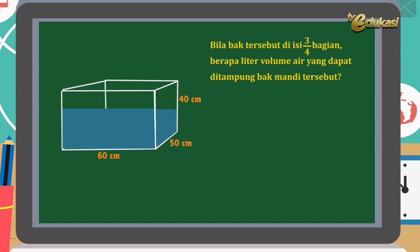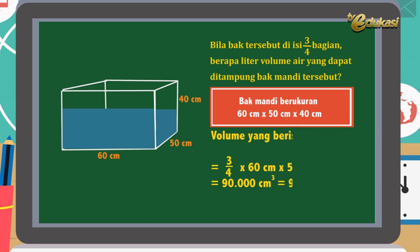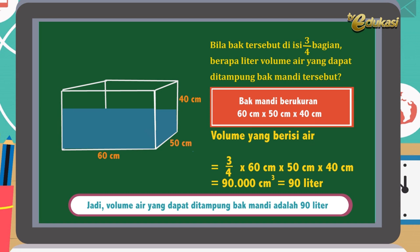Silahkan dipikirkan sebentar, bapak akan berikan jawabannya. Informasinya: bak mandi berukuran 60 cm × 50 cm × 40 cm, diisi ¾ bagian. Berarti volumenya adalah ¾ × 60 cm × 50 cm × 40 cm, yang sama dengan 90.000 cm³, atau sama dengan 90 liter. Kesimpulannya: volume air yang ada di dalam bak adalah 90 liter.